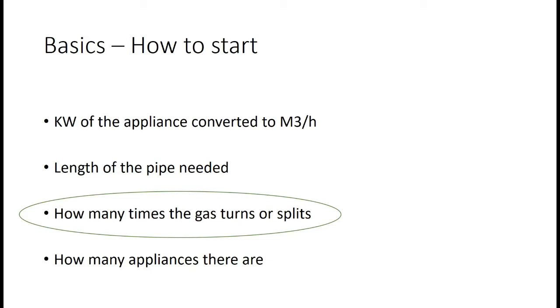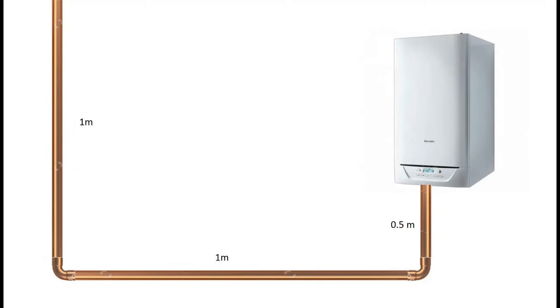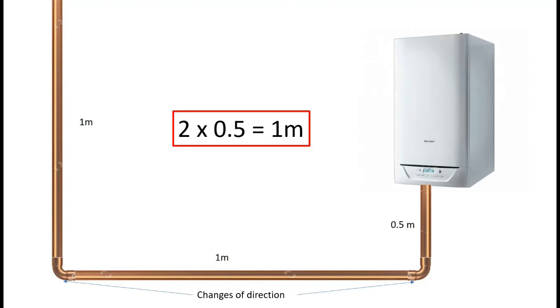Now we move on to the third part, which is how many times does the gas turn or split. In this case it turns twice, once at the first 90 degree elbow and once at the second. Each turn is worth 0.5 of a meter of pressure drop. So we've got two at 0.5 of a meter, so we add one meter to the overall length.